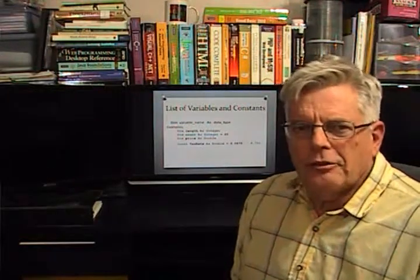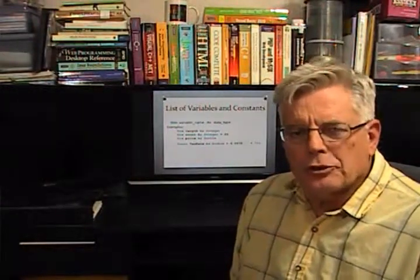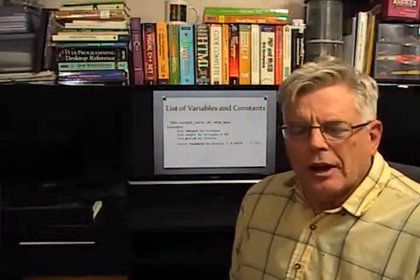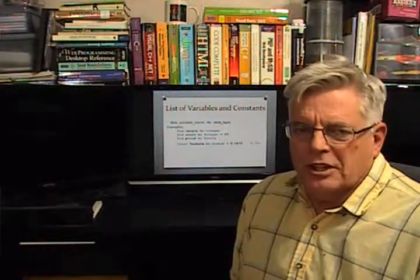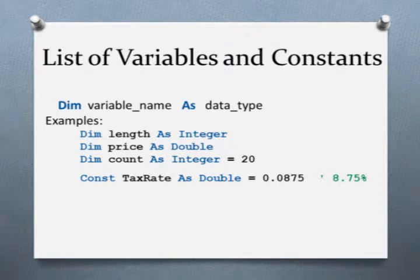In Visual Basic you declare a variable starting with the keyword dim. It's a throwback to old Basic where we declared an array starting with dim, which stands for dimension. We start off with dim, the name of the variable — you can't have any spaces in your variable names — then the word as, and then a data type. For example, you can say dim length as integer or dim price as double.